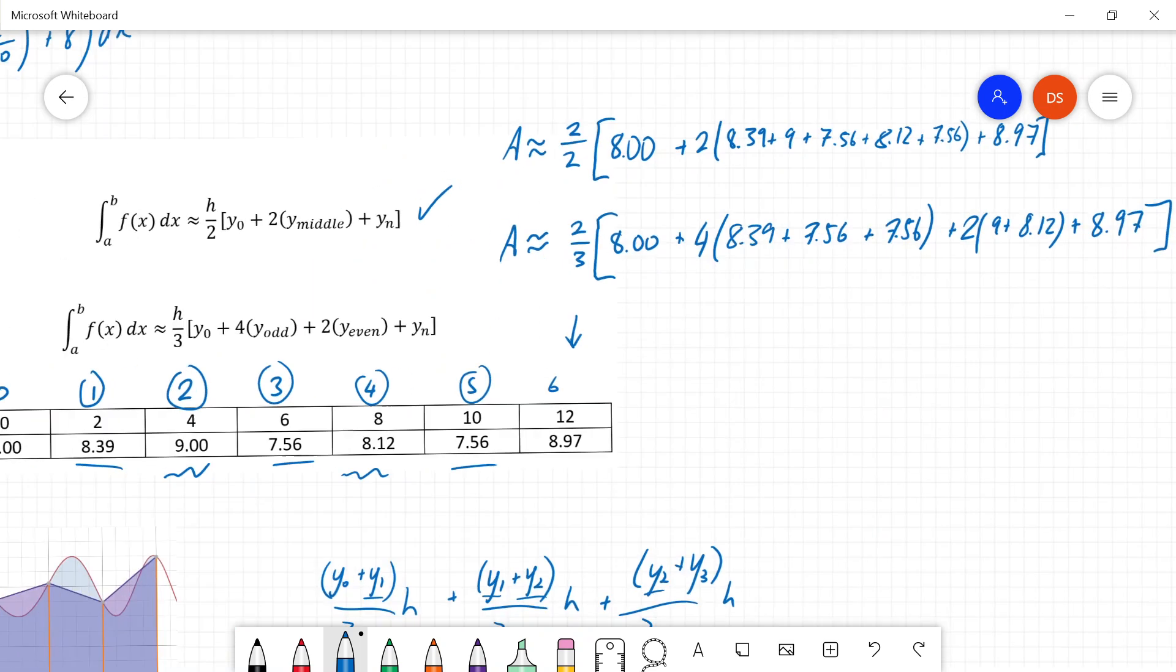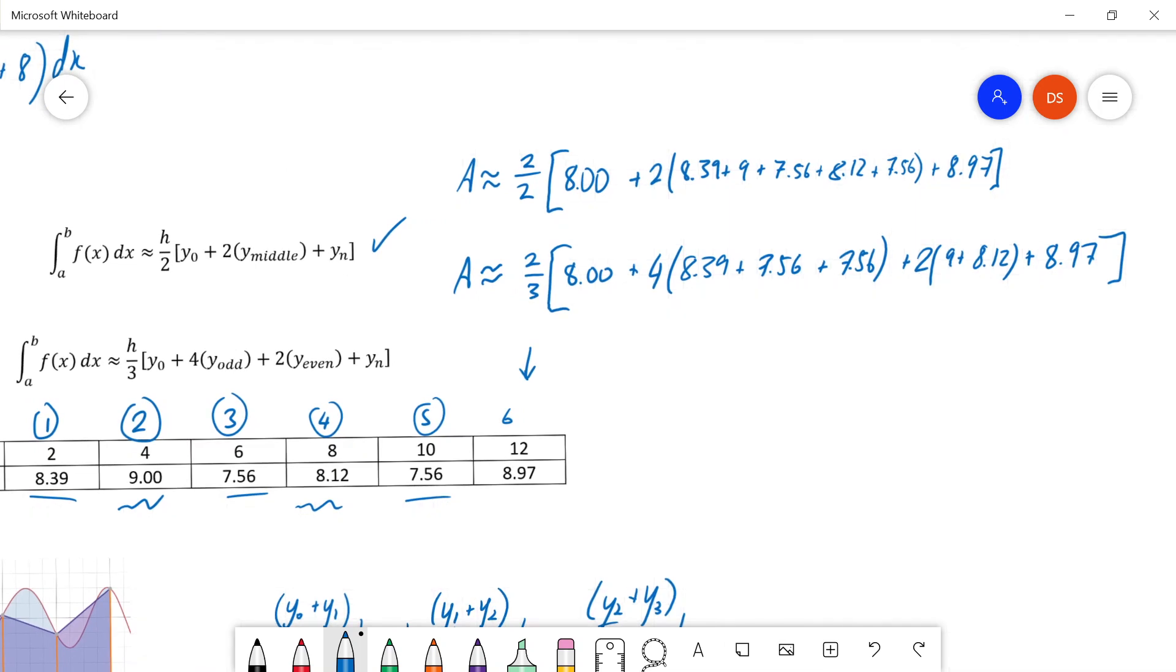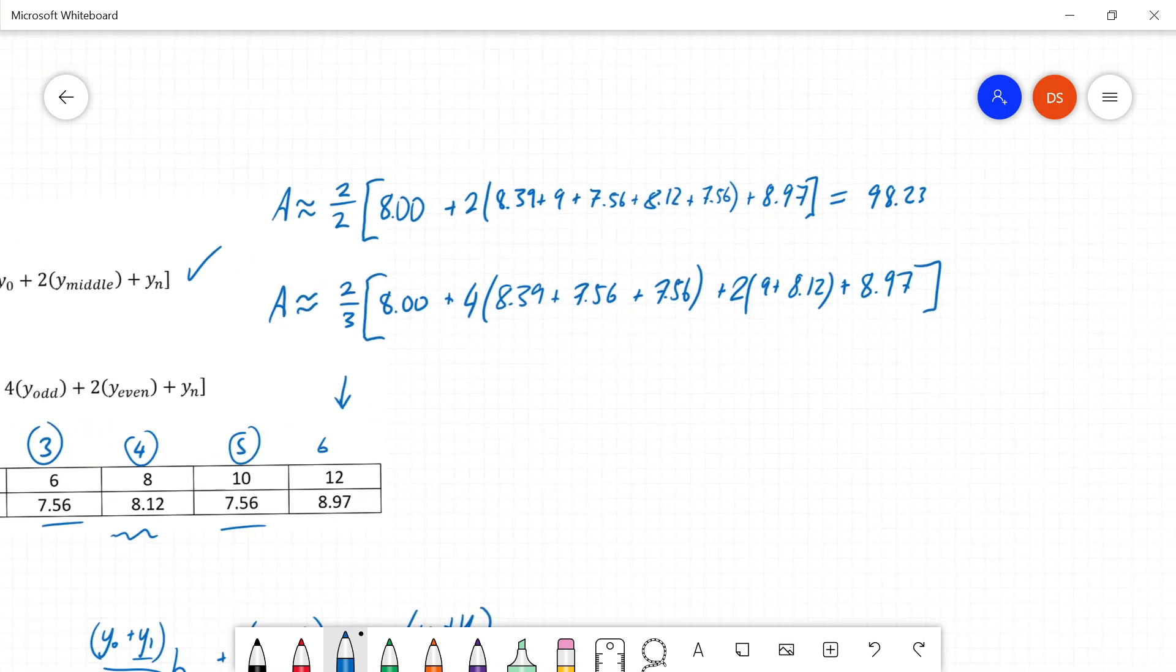If I type in these two approximations, I should be able to get an approximation for the area. So I'm going to grab a calculator, and I'm going to type this in for me, and I get an approximation of the area that is equal to 98.23. But if I did Simpson's rule, I'd get a slightly different answer. I get 96.83 recurring.